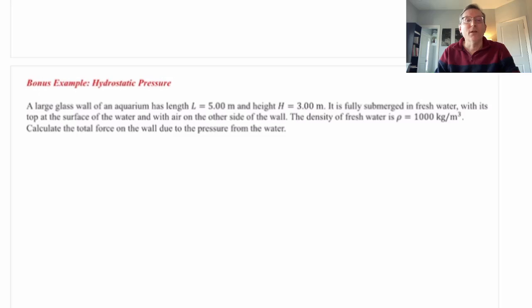The wording goes like this. We have a large glass wall of an aquarium. The wall has a length L of five meters and a height H of three meters. So it's quite large. The aquarium is fully submerged in fresh water with its top at the surface of the water. In other words, the water completely fills it, and with air on the other side of the wall. The density of fresh water is rho equals 1000 kg per meter cubed. Here's the question: Calculate the total force on the wall due to the pressure from the water.